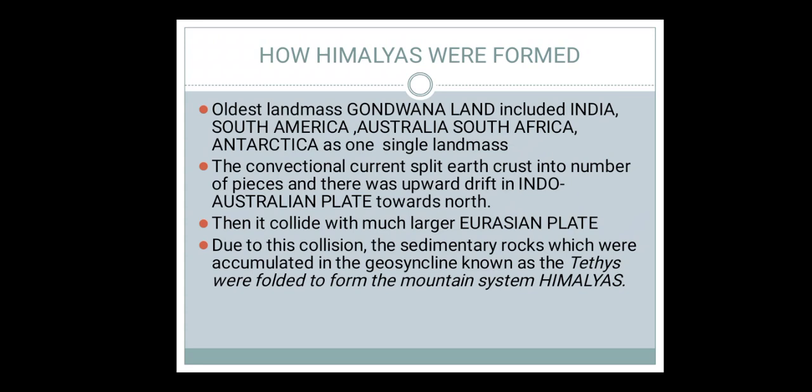The Indo-Australian plate moved towards the north and collided with the much larger Eurasian plate. Because of this collision, the sedimentary rocks which were accumulated in the Tethys Sea were folded to form a mountain system. This is called the Himalayas — that is how the Himalayan mountains were formed.